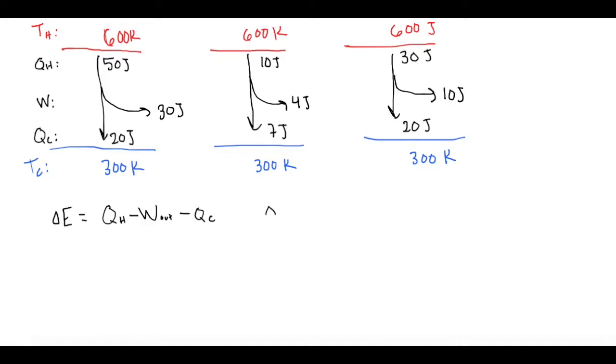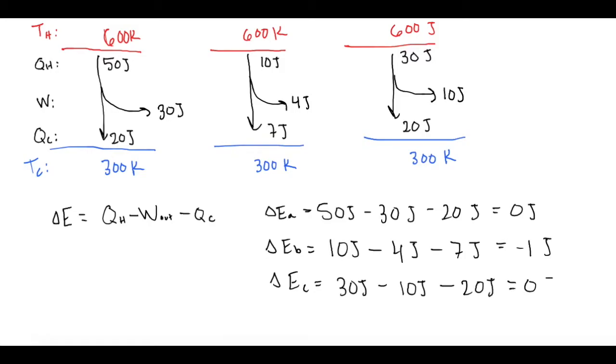So the delta E for A is QH is 50 joules minus work out is 30 joules minus QC which is 20 joules, and that gives us 0 joules. The delta E for B is 10 joules minus work which is 4 joules minus QC which is 7 joules, and that gives us negative 1 joules. Change in energy for C is QH is 30 joules minus work is 10 joules minus QC is 20 joules. So that gives us 0 joules.